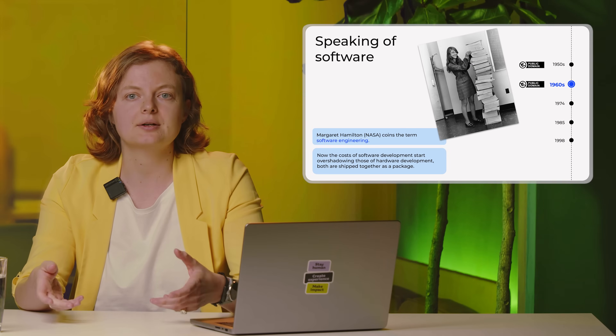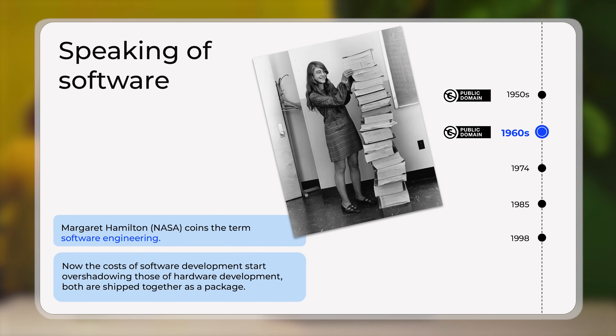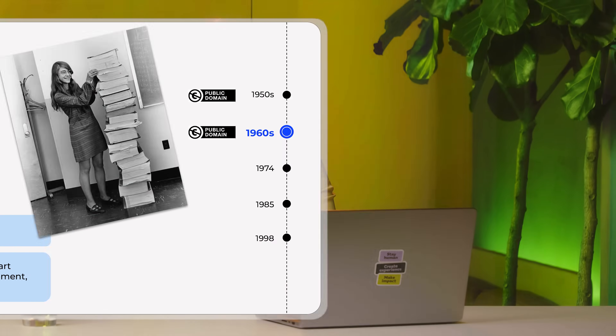For the next decade things remained more or less the same. Fast-forwarding to 1960 and the Apollo 11 mission, which brought us as a species to the moon thanks to the efforts of Margaret Hamilton at NASA and her team — that's basically when we started using the term 'software engineering,' which she introduced. In the picture you can see her standing with a pile of code she wrote for that space mission. All of this code is public domain still.